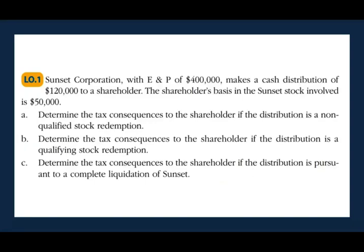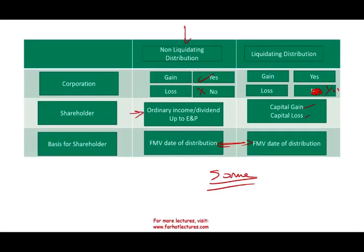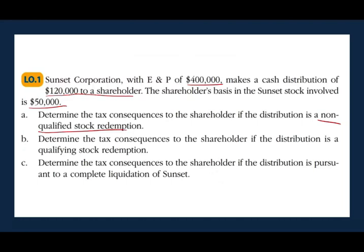Sunset Corporation with E&P of $400,000 makes a cash distribution of $120,000 to a stockholder whose basis in Sunset is $50,000. Determine the tax consequences. If the distribution is a non-qualified stock redemption — non-liquidating — since we have E&P, the $120,000 is treated as a dividend, and we have plenty of E&P to support that treatment. So this is a dividend.